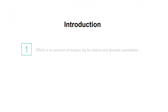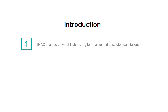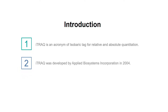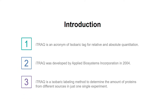iTRAQ is an acronym of Isobaric TAG for Relative and Absolute Quantitation, which was developed by Applied Biosystems Incorporation in 2004. It is an isobaric labeling method to determine the amount of proteins from different sources in just one single experiment by mass spectrometry.